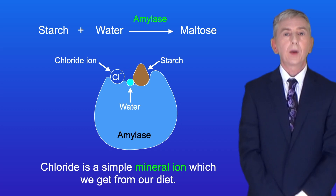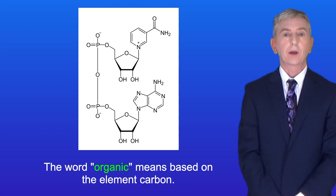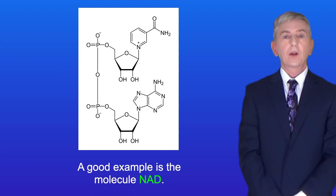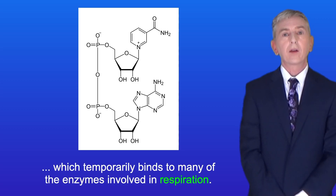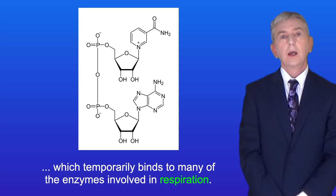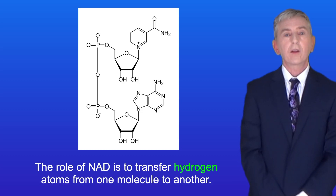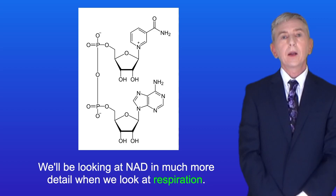Now chloride is a simple mineral ion which we get from our diet. However, many cofactors are complex organic molecules, and the word organic means based on the element carbon. A good example is the molecule NAD. NAD is a large organic molecule which temporarily binds to many of the enzymes involved in respiration. And the role of NAD is to transfer hydrogen atoms from one molecule to another. We'll be looking at NAD in much more detail when we look at respiration.